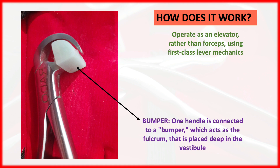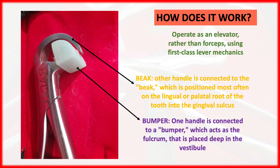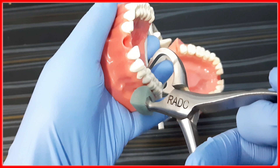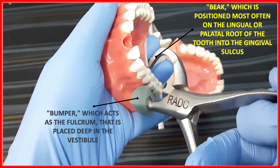Look at the figure. One handle is connected to a bumper, which acts as a fulcrum and is placed deep in the vestibule. The other handle is connected to a beak, which is positioned most often on the lingual or palatal root of the tooth into the gingival sulcus. So the bumper is always placed buccally, and the beak is always placed lingually or palatally.